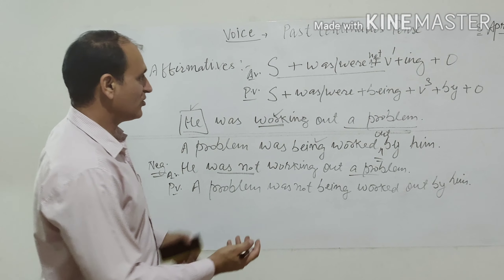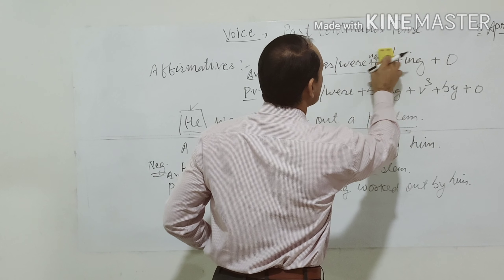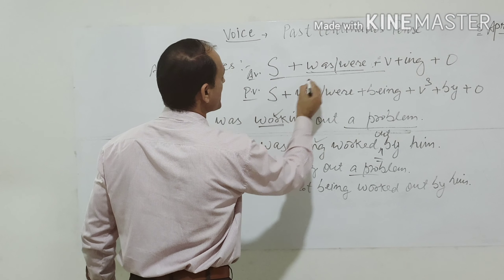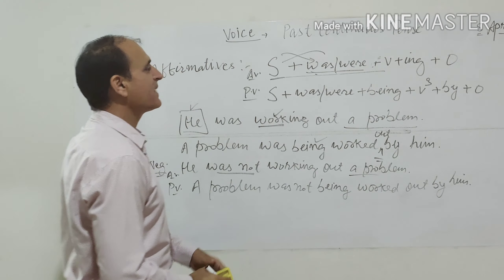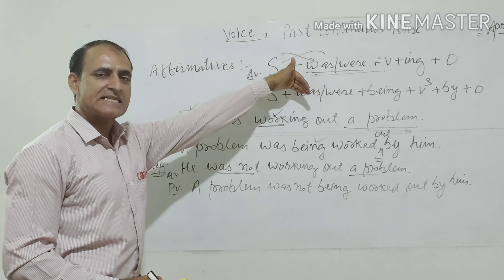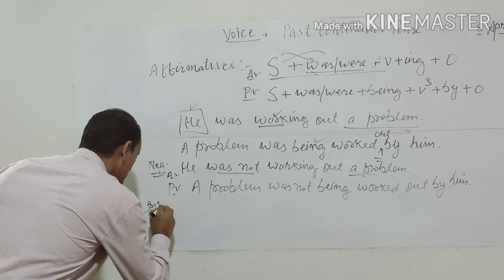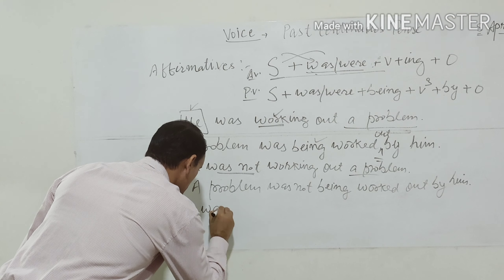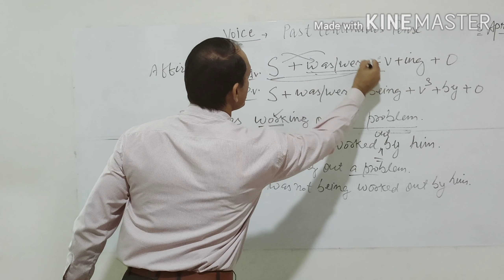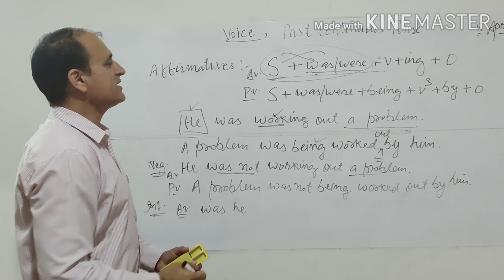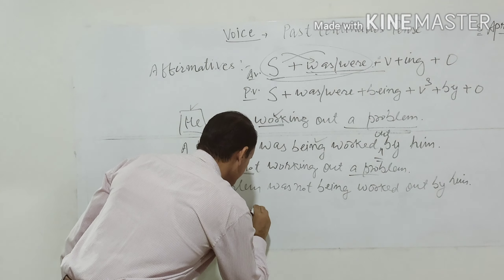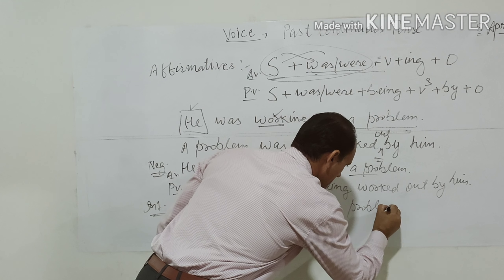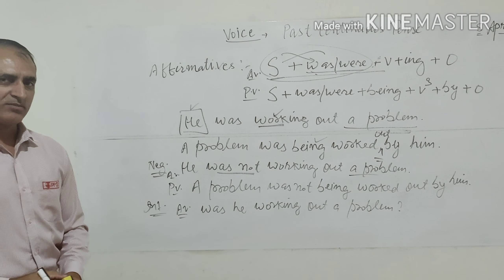Now let's change this into an interrogative sentence. We erase 'not' and switch the place of the helping verb and subject. The helping verb comes first and the subject comes second. The active interrogative becomes: 'Was he working out a problem?' — we have switched the place of subject and helping verb.